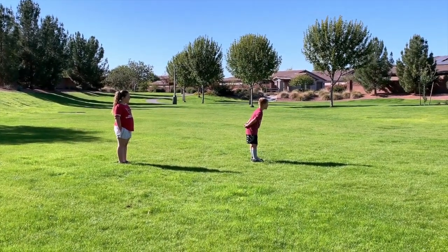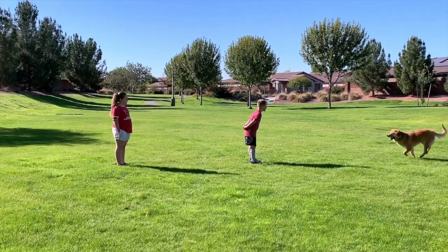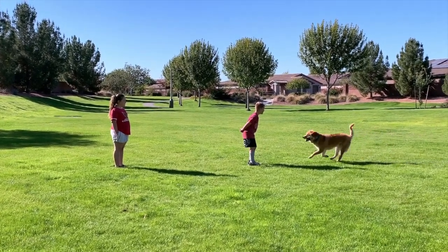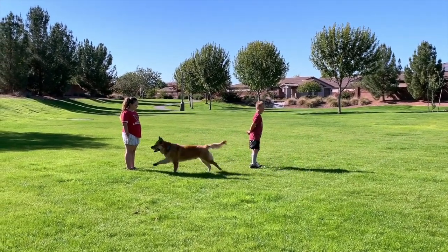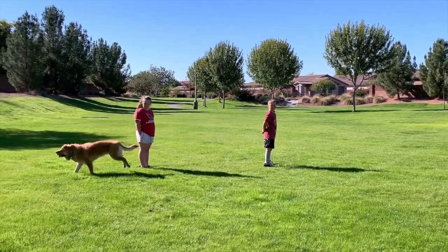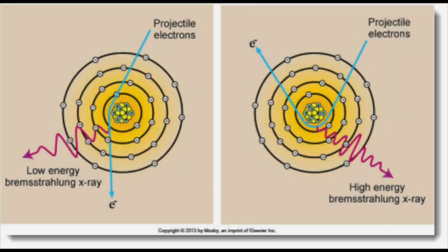Bremsstrahlung interactions can make different x-ray energies because the incident electrons are slowed down at different rates, and those closest to the nucleus have higher energy x-ray photons.